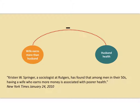There was a New York Times article a while back that focused on wives earning more than their husbands and the effects on those husbands. The article reported results from a study by Kristen Springer, a sociologist at Rutgers, who found that among men in their 50s, having a wife who earns more money is associated with poorer health. Among the highest earning couples in her study, a husband who earns less than his wife is 60% less likely to be in good health compared with men who earn more than their wives.